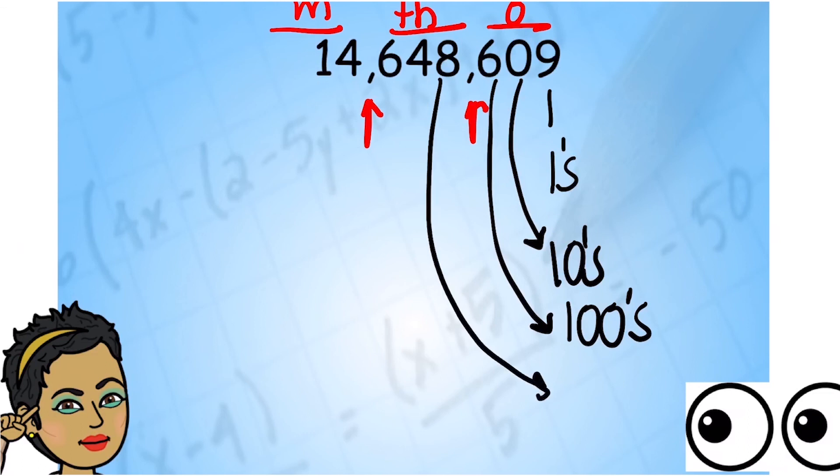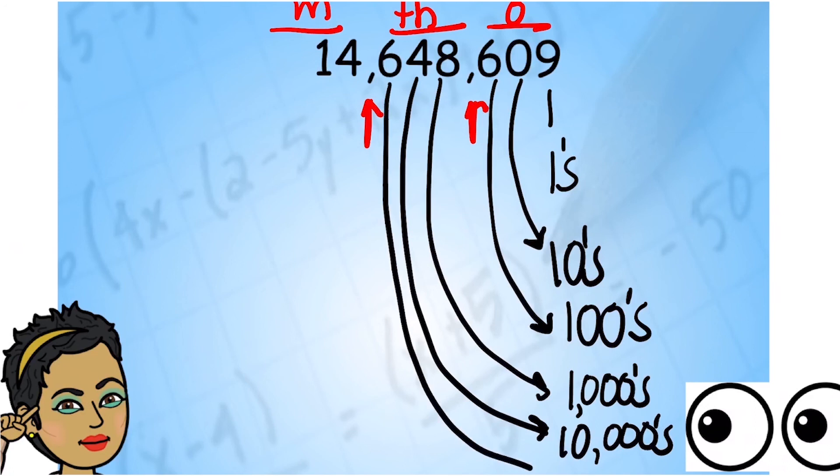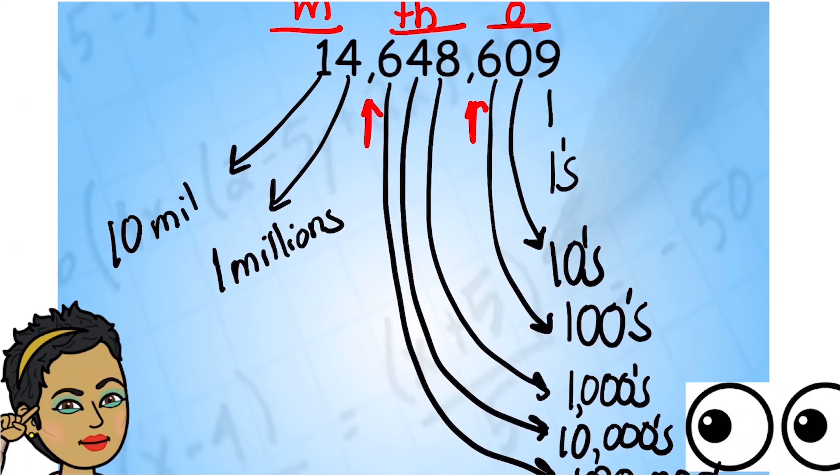We have one thousands, and then we have ten thousands, and then we have hundred thousands. You can guess how it continues going in the millions. I have one millions, ten millions, and if I had another number, could you guess what it would be? Yep, hundred millions. So that's the way the system goes. It's ones, tens, hundreds. Ones, tens, hundreds.